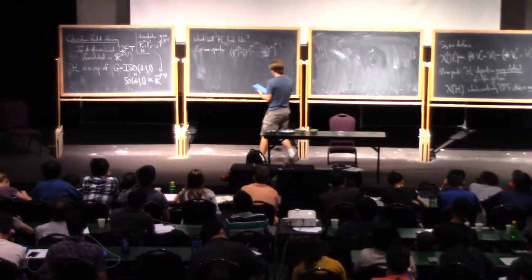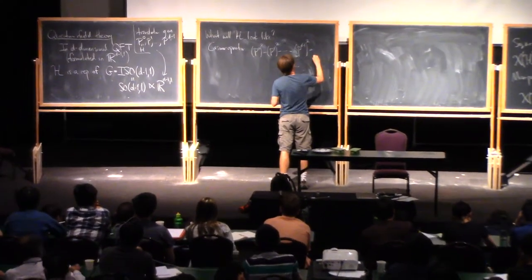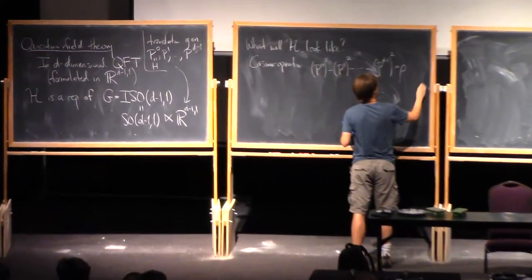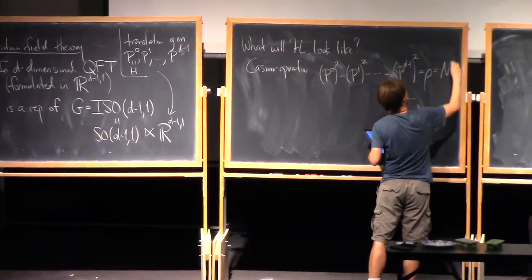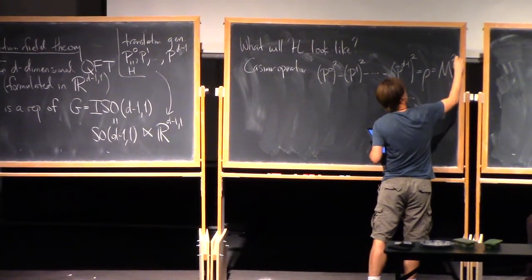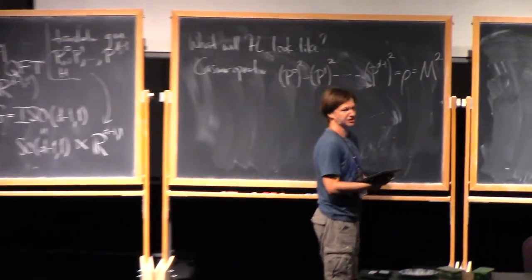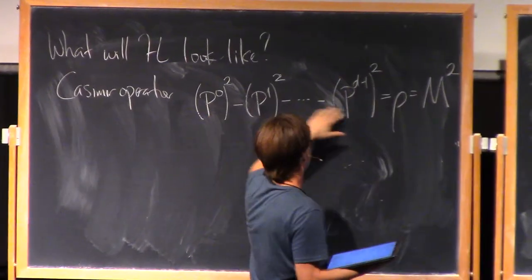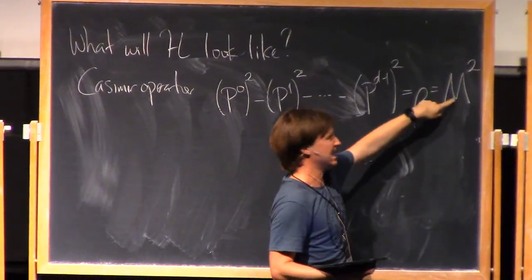Let me call that... we could call it rho, but it'll be convenient to call it M squared. So we're only going to consider representations where this Casimir acts as a positive number, which I'll call M squared.